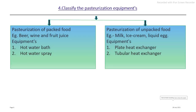Pasteurization equipment is classified into two groups: the first group is pasteurization of packed food, and the second group is pasteurization of unpacked food — that means after-packaging and before-packaging pasteurization. The batch process for packed food uses a hot water bath or hot water spray. The before-packaging pasteurization process uses heat exchangers, including plate heat exchangers and tubular heat exchangers.